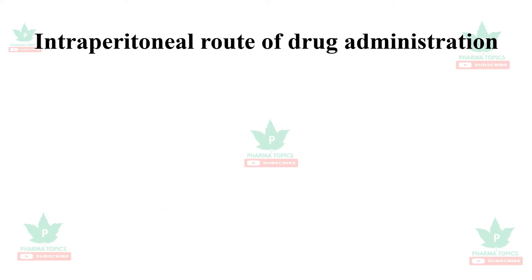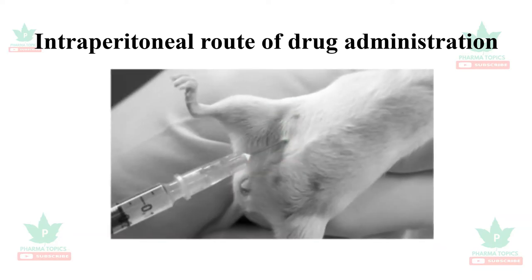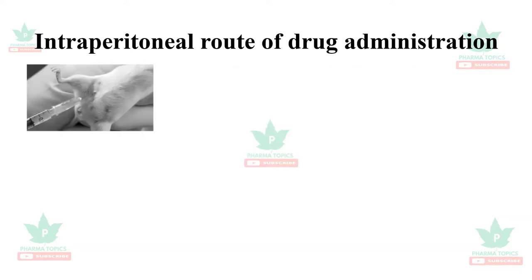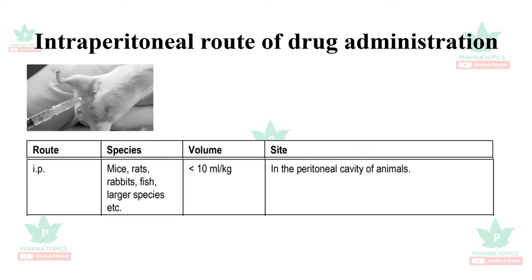The intraperitoneal route of drug administration is very common. It is administered in rats, mice, rabbits, fish, and even larger species. The drug volume administered is less than 10 ml per kg, and it is injected into the peritoneal cavity of the animals.